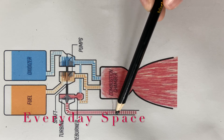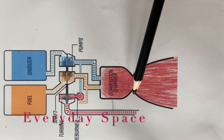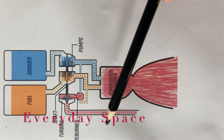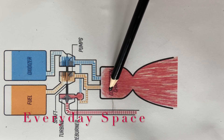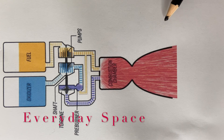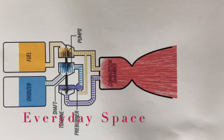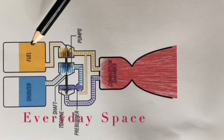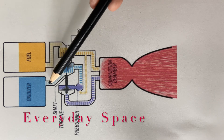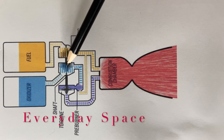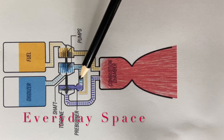Now let's look at the rocket engine the Russians designed to make the fuel more efficient by connecting the pre-burner output into the combustion chamber. This is the closed cycle oxidizer rich engine. Like the open cycle, it has an oxidizer and a fuel, and they go into the turboshaft assembly — but from there they go into their separate tunnels.